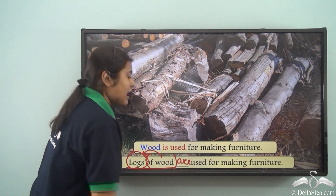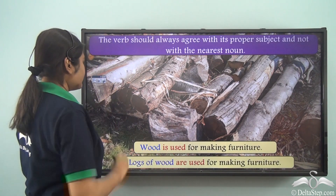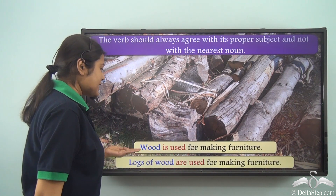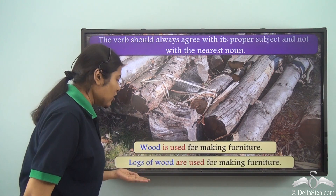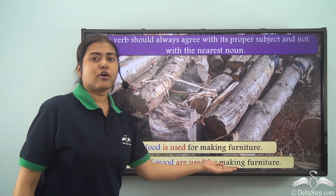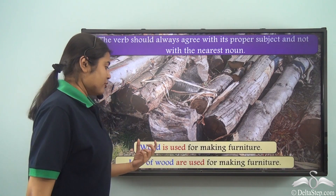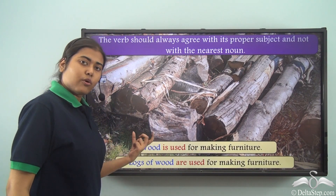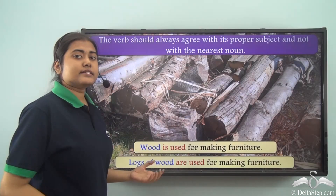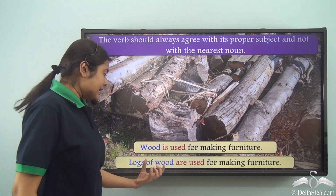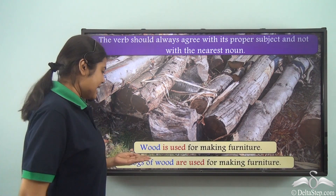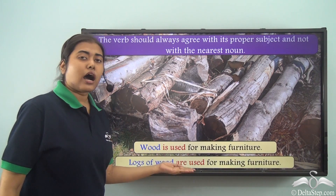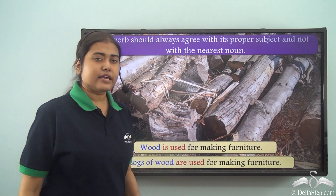Hence we are going to use 'are.' So: wood is used for making furniture, but logs of wood are used for making furniture. When wood is used only as itself, it is an uncountable noun. But when we are considering wood in terms of logs, then logs are countable. Hence: logs of wood are used for making furniture.